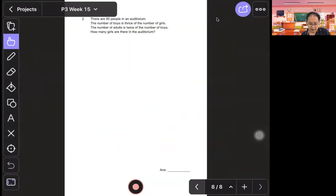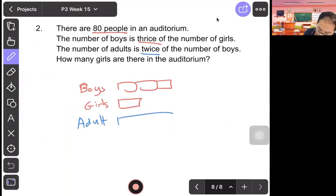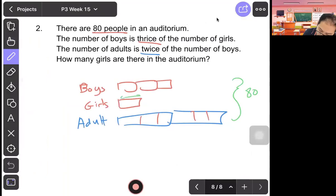Next question: There are 80 people in an auditorium. The number of boys is thrice the number of girls. So boys, three times of the girls. Then the adult is twice the boy. So adult is two times. One, two, one, two of the boy. We may like to break this into three, three. So all together, there are 80 people as stated. They ask for the girl. How many girls are there? Total there are 3, 4, 5, 6, 7, 8, 9, 10 units. So 10 units equal to 80. The girls is one unit. So what I need to do is take 80, divide by 10 and get the answer 8. So there are 8 girls in the auditorium.